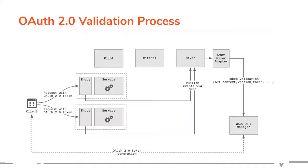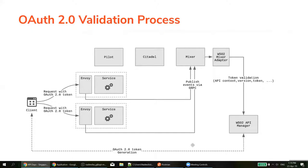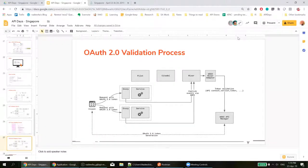The second scenario is a standard OAuth2 token. The difference here is that earlier the WSO2 Mixer adapter itself validated the token. In this case, the Mixer adapter communicates with the API Manager, and the API Manager is the policy decision point. It passes the decision back to the Mixer adapter to allow or deny access to a given API. What is passed from the Mixer adapter to the API Manager is the API context, the version, the token itself, and other information that allows the API Manager to make the authorization decision.